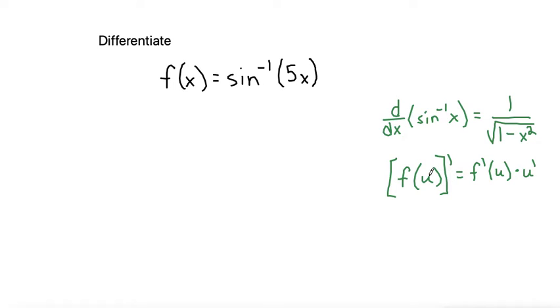So I think it's helpful in these types of problems to first identify the outside function and identify the inside function. And when we do that, let's write the outside function with the inside function just being u. Since what's inside is 5x, let's write that u is equal to 5x, which makes f be equal to sine inverse of u. So I'm replacing, instead of writing 5x, I'm going to write that u.